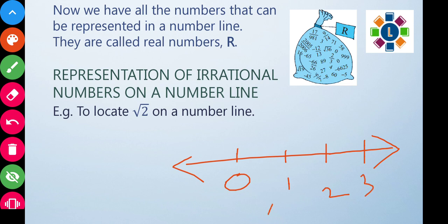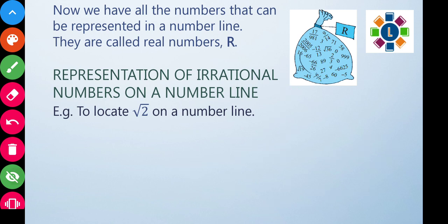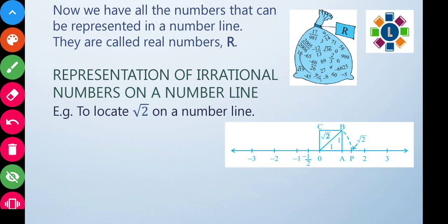From the point one on the number line, we draw a perpendicular of one unit upward. Then we draw a line from the origin O to the top of this perpendicular. The length of this line from O to B is what we want to find using the Pythagorean theorem.